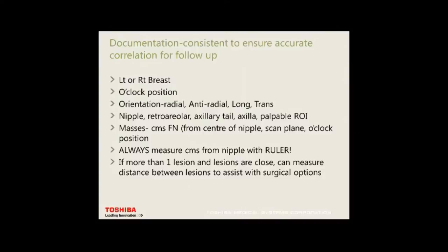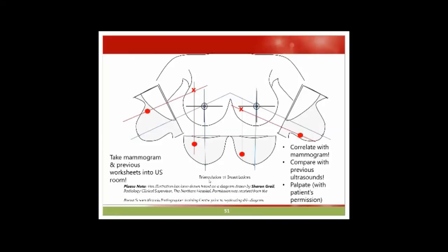Documentation should be consistent across your practice for accurate correlation and follow-up. Label the side, clock position, and location. Always measure in centimetres from the nipple with a ruler — don't just estimate. If there's more than one lesion, measure the distance between them, as surgery may involve a wide breast excision from one cut. Always correlate with the mammogram and understand triangulation. Compare with previous ultrasounds — look at the actual images, not just the report. Palpate any lumps with the patient's permission and take mammograms and previous worksheets into the ultrasound room.